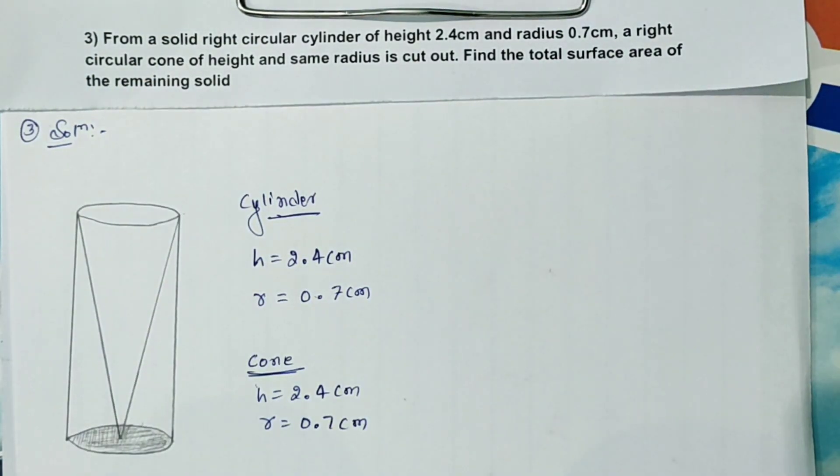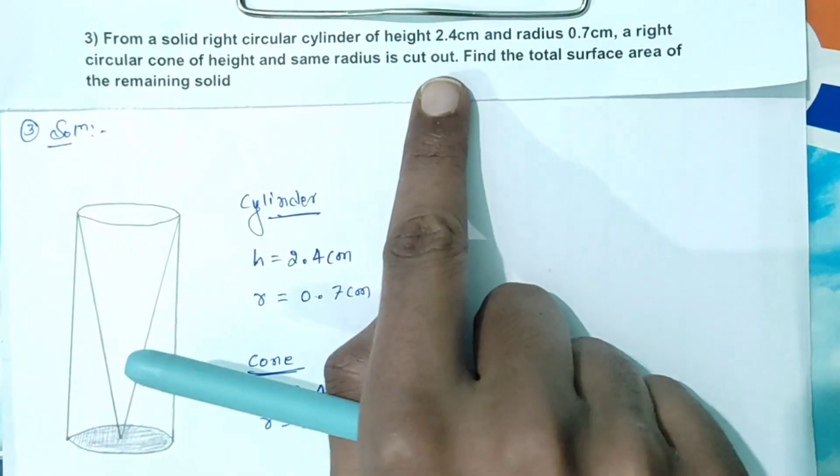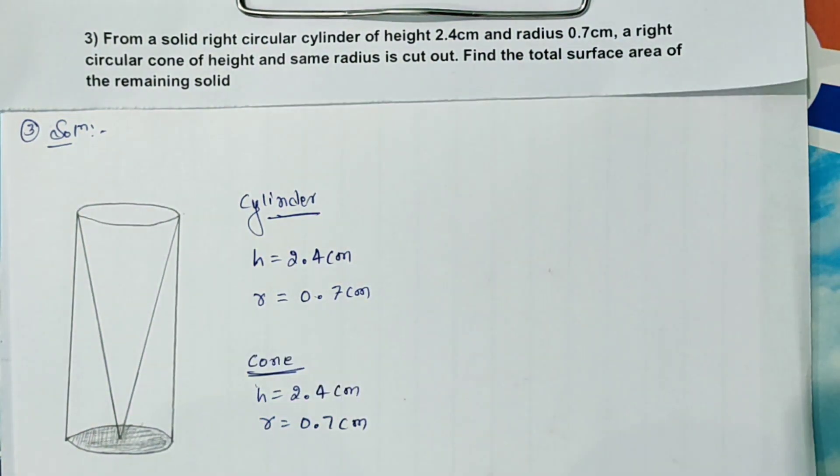Now next problem. From a solid right circular cylinder of height 2.4 cm and radius 0.7 cm, a right circular cone of height and same radius is cut out.